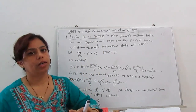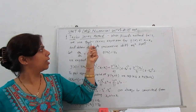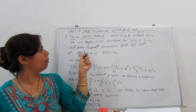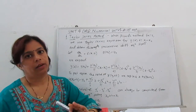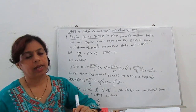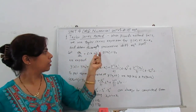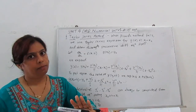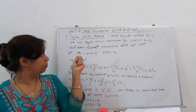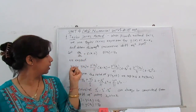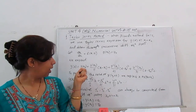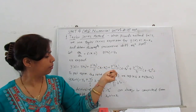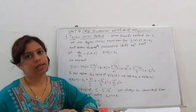For the Taylor series method, you already know about Taylor series expansion. We use Taylor series expansion for the function y(x) at x₀ and obtain it through successive differentiation of the equation. The expansion is: y(x) = y(x₀) + y'(x₀)/1! · (x−x₀) + y''(x₀)/2! · (x−x₀)² + ... This is our Taylor series expansion.